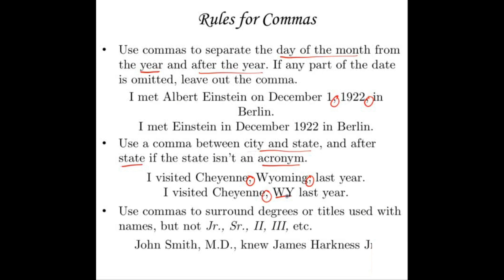Use commas to surround degrees or titles used with names, but not junior, senior, the second, the third, etc. In English, if a father names his son after himself with exactly the same name, someone becomes so-and-so junior or the third — you don't use commas around those. But you do use commas around degrees or titles. So: "John Smith, MD, knew James Harkness Jr." — MD is a title, so it gets commas; but junior is not a title or degree, so James Harkness Jr. gets no comma.